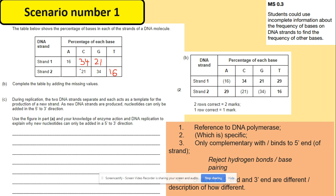Once you add up adenine and thymine with the other values to reach 100, the missing value is 29 for thymine on strand 1, which will bind with 29 of adenine on strand 2.